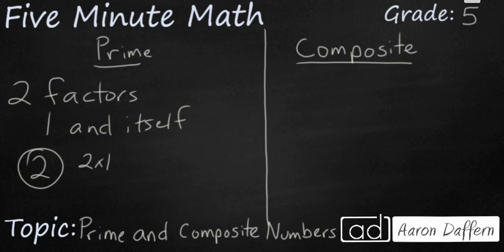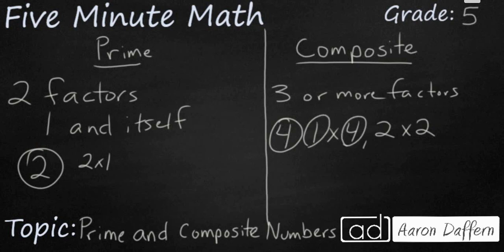Now, when you have a composite number, a composite number has three or more factors. And so an example of a composite number would be four, because if I wanted to make four, I could obviously multiply one times four, but I could also multiply two times two. So the number four has three factors: one, four, and two.